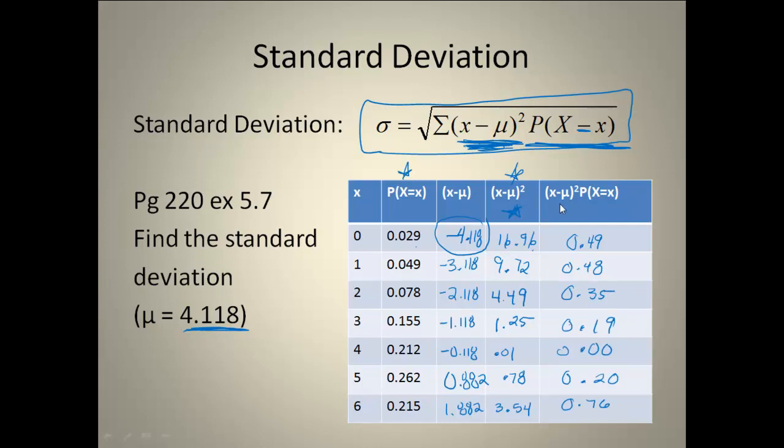Right now, I have got my X minus μ squared times my probability that X is equal to X. I've got all those values figured out. Now, if I go back to my formula, the summation tells me I need to add all of those up. Add all those together, and you should get 2.47. I've taken care of the summation of my X minus μ squared times its probability. I have everything underneath my square root taken care of. Now all I need to do is take the square root. The square root of 2.47 ends up being 1.57. So that's my standard deviation for this problem, which means, on average, the tellers that are busy are 1.57 tellers away from the mean. Thank you.